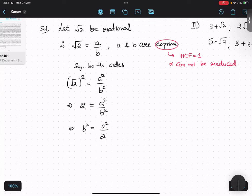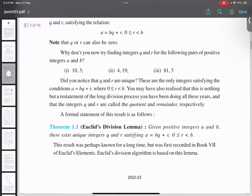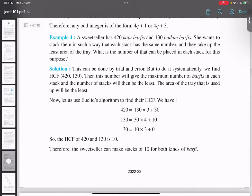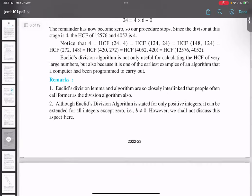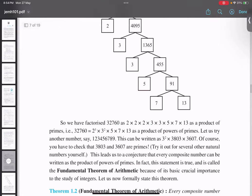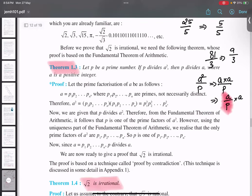Now, over here our theorem comes. Remember, I will just explain this theorem to you. Theorem number 1.3. If A square is divisible by B, then A is also divisible by B. You can read about this thing later on.